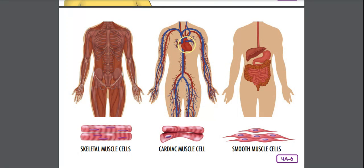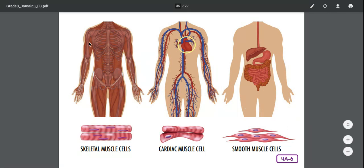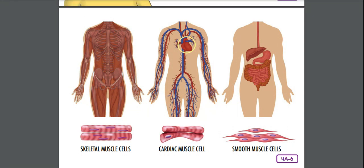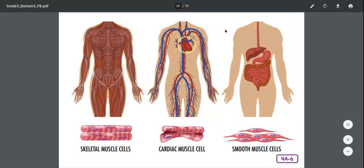Examples of voluntary and involuntary muscles: your voluntary muscles are your skeletal muscles — any movement you decide to do, like moving your legs, arms, twisting, or jumping. Cardiac muscles — your heart beating — and your intestinal and circulatory systems are involuntary muscles.